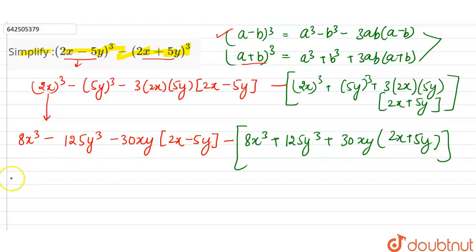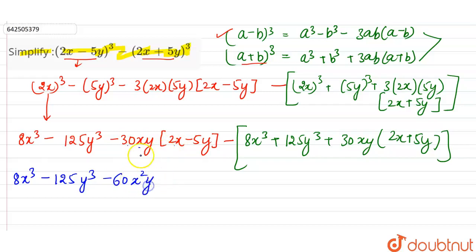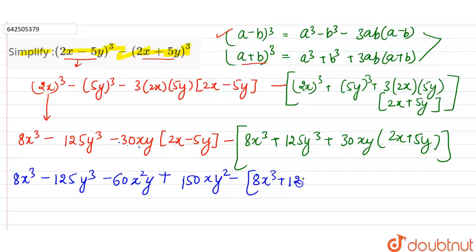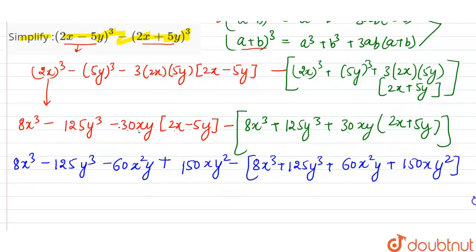Now let's simplify the equation. Expanding the first bracket: 8x cube minus 125y cube, then minus 30 into 2x gives minus 60x squared y, and minus minus gives plus 150xy squared. The second bracket gives 8x cube plus 125y cube, plus 30 into 2x equals 60x squared y, and plus 30 into 5 equals 150xy squared.